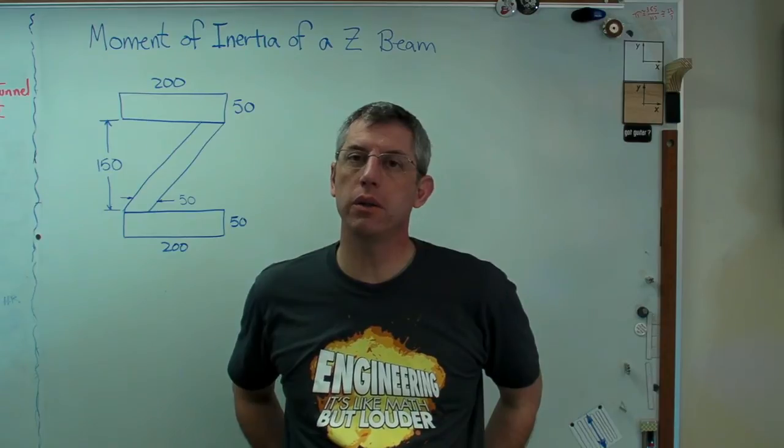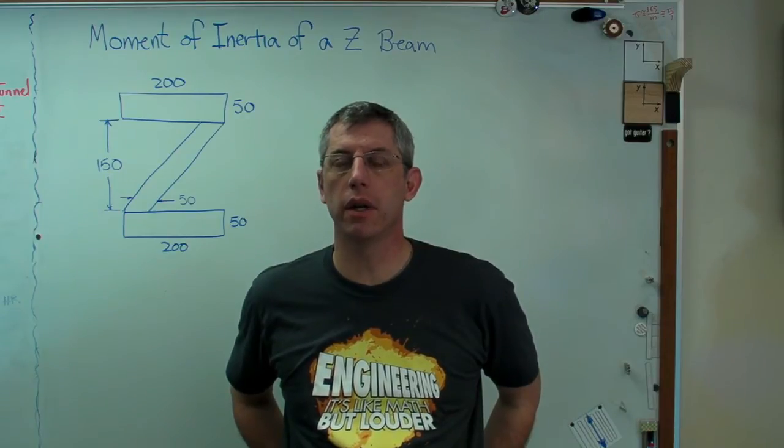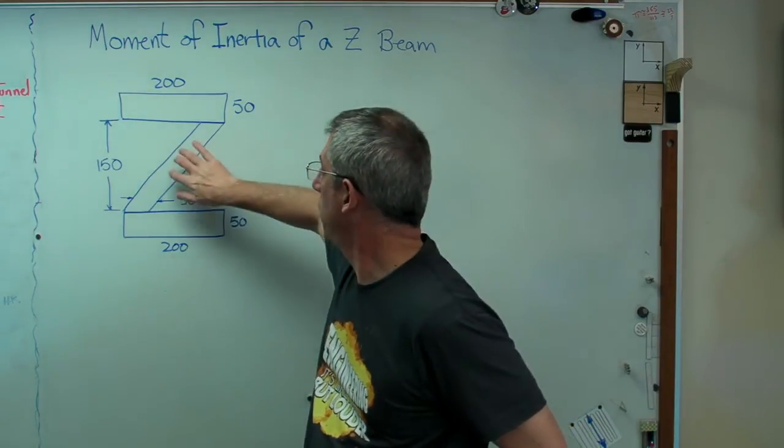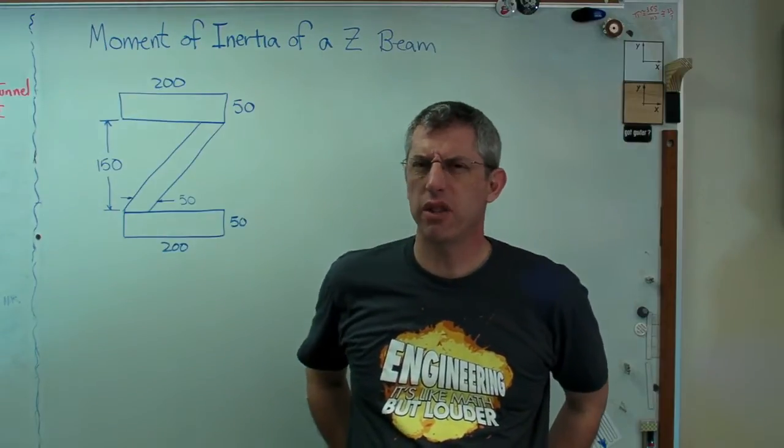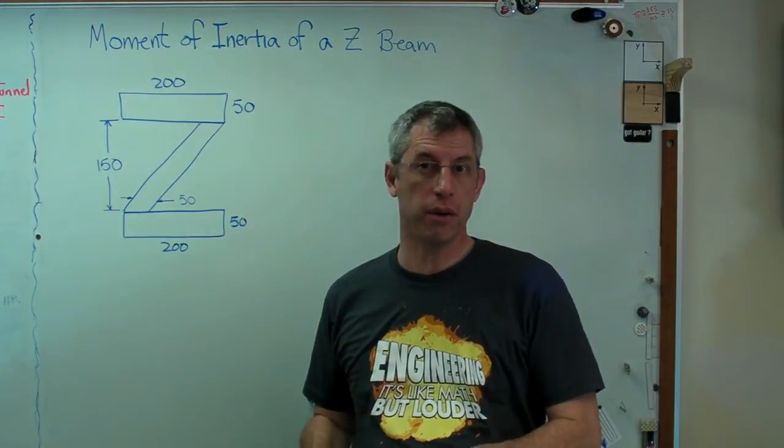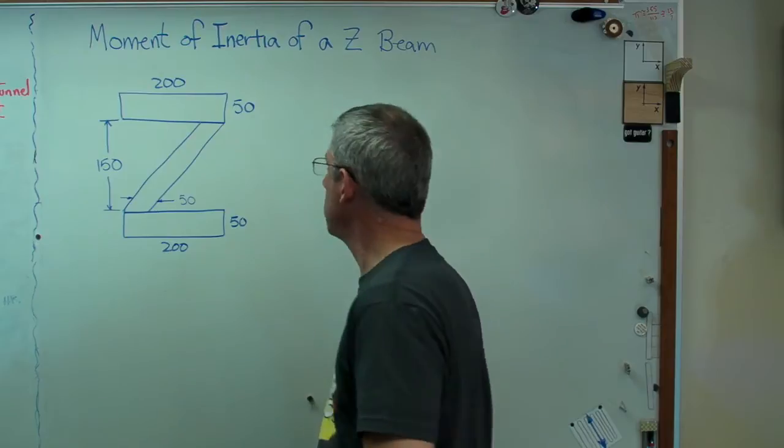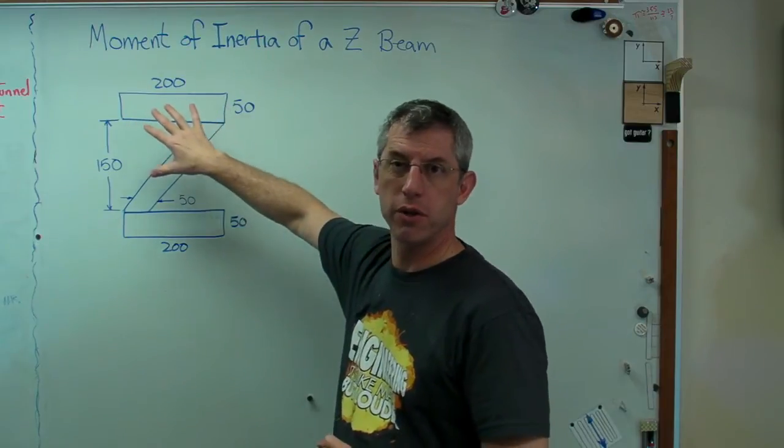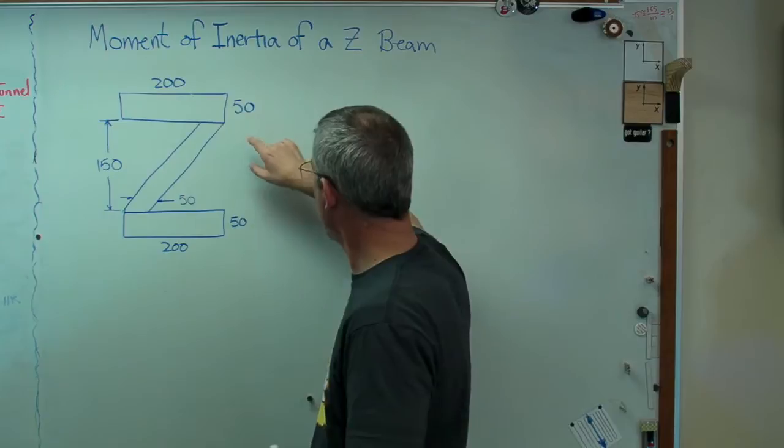The previous video was how to calculate the area moment of inertia of a parallelogram. That's the parallelogram right there. Turns out it's not too hard, and I'll make use of that result here. So here I made up a Z-shaped beam, and these dimensions are all in millimeters. So it's 200 millimeters wide.